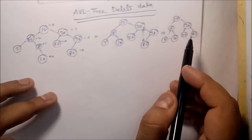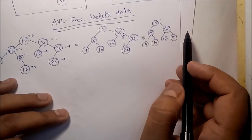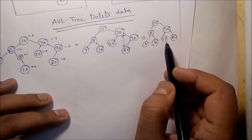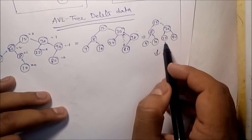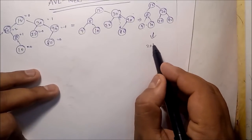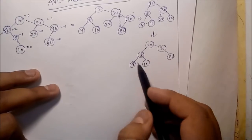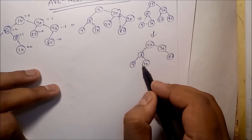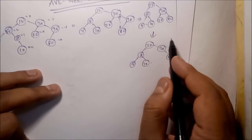Now suppose you want to delete 12. If you want to delete 12, that means both children are there. For 12, we have to identify the successor of 12. The successor of 12 is 22. After deleting 12, replace 12 with 22 and remove 22 from its original position. Then 22 will be the root. We recalculate the height difference — 0, 0, 0, 0, 1, 1, 2 — it is 0. So it is still balanced.